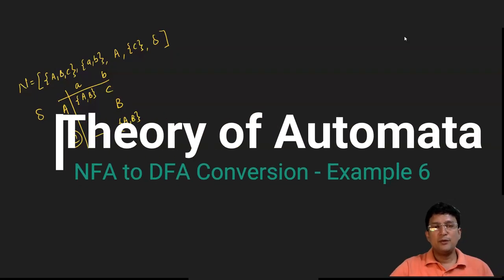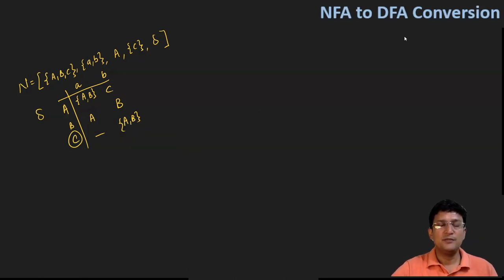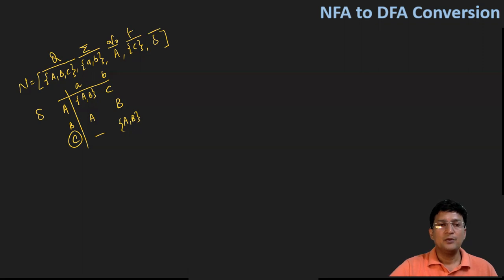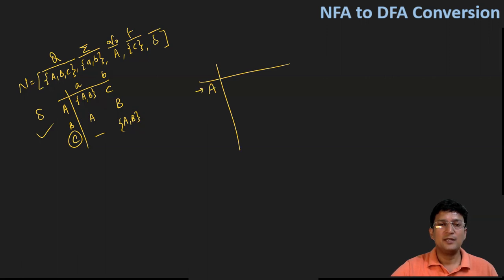Let's take one more example for the NFA to DFA conversion, where the NFA is given as a five-tuple. As per the definition, these five tuples will be defined: the set of all states, the set of input alphabets, the start state q-zero, the set of final states F, and the transition function delta. Now we have to convert this to DFA, following the routine process starting with the start state A and input alphabets a and b.